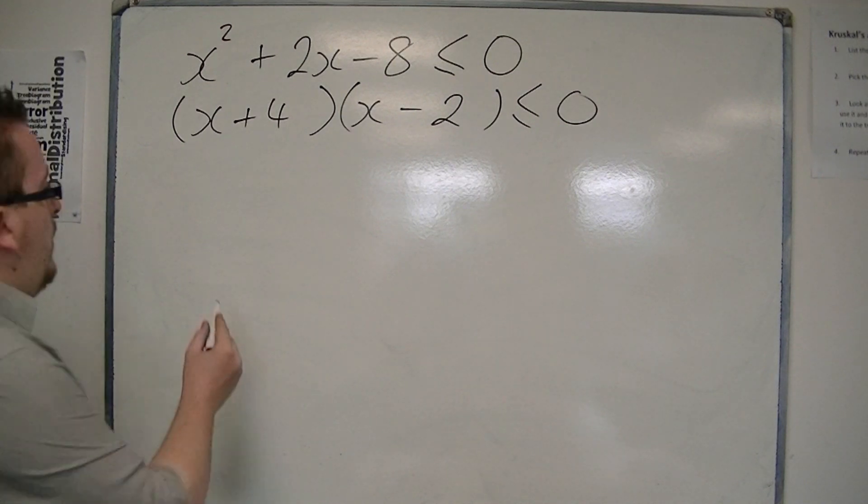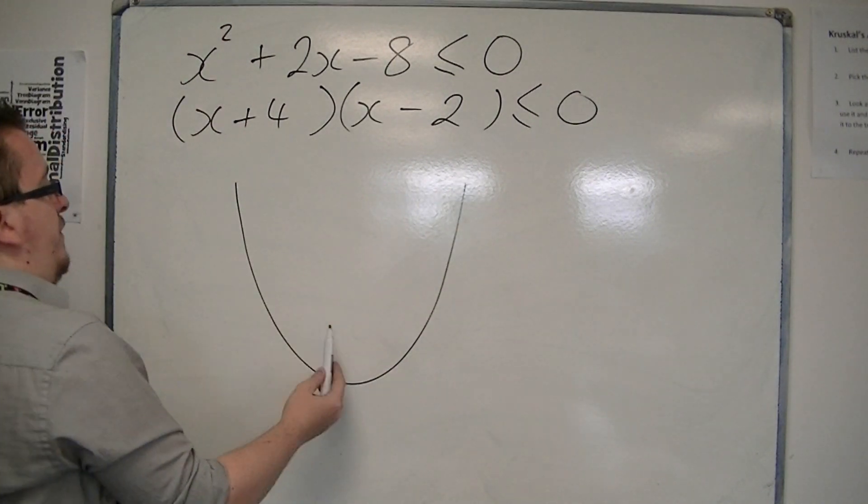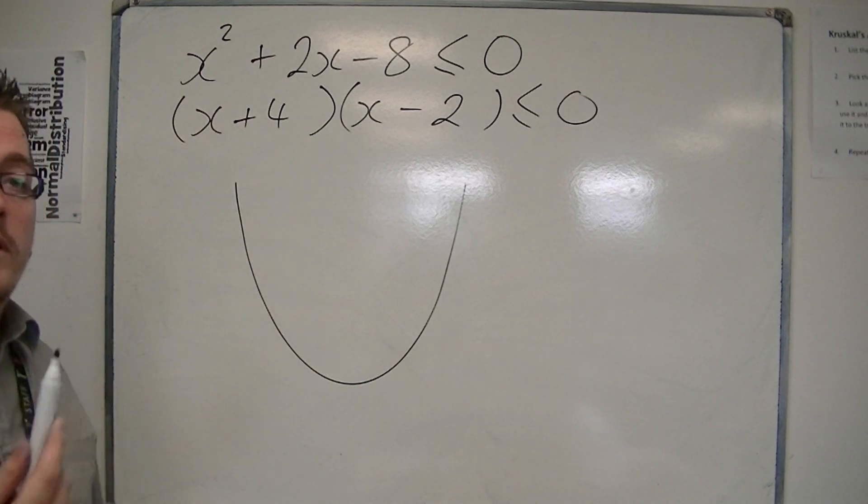So that means we have a parabola. It's positive, so it looks like this, because the number in front of the x squared is positive.